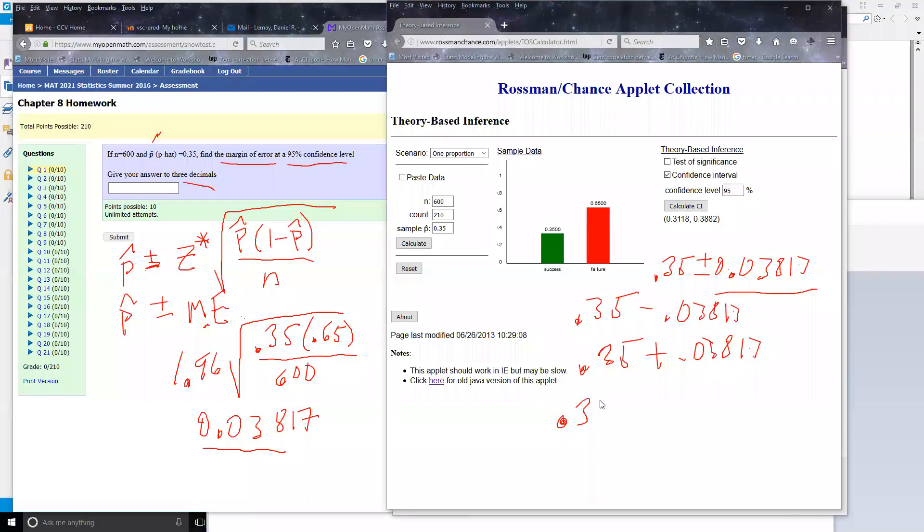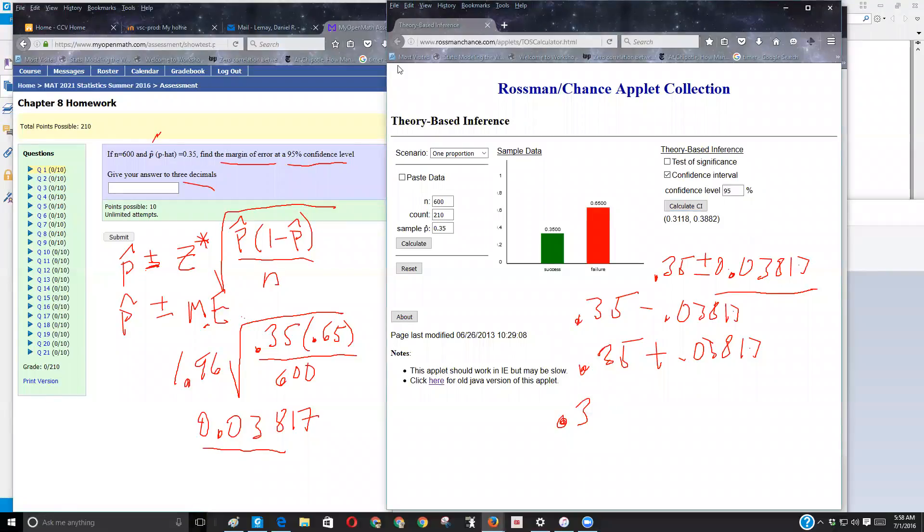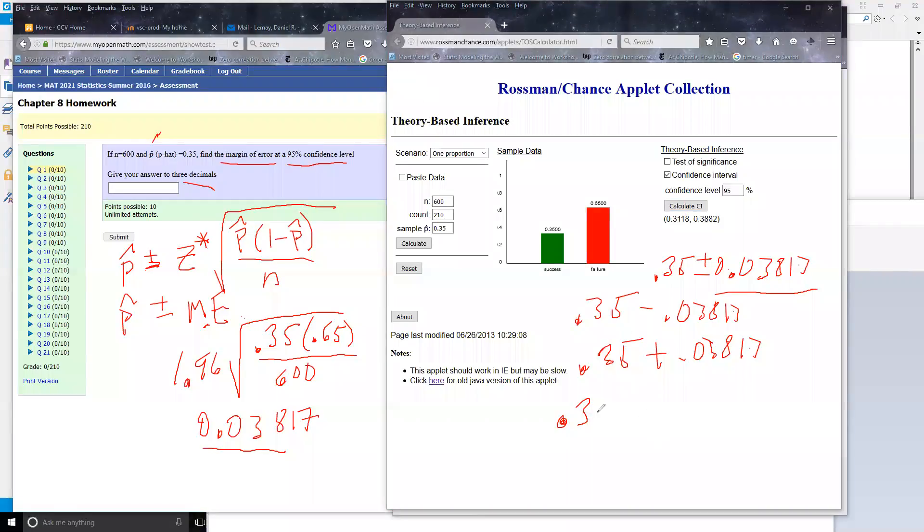0.31—I lost my drawing tool—0.3118 is less than or equal to p-hat, which is less than or equal to 0.3882.